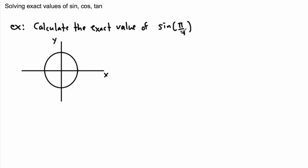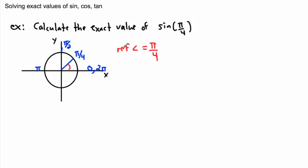Let's calculate the exact value of sine of π over 4. We draw our angle of π over 4. This is 0 and 2π, this is π. π over 2 is halfway, and π over 4 is half of that — so I go right here. My reference angle is π over 4, which is 45 degrees. So I'll say theta equals 45 degrees.